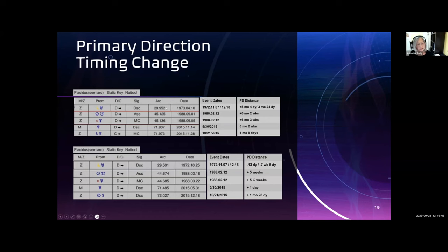This is to explain the chart a little bit. We have the promitor, which way it's being directed, the significator, its arc, and the date that it shows up. These are the event dates, and the distance from April 1973 to November and December 1973 are given here, and so on for the other data points.